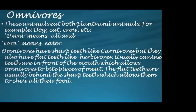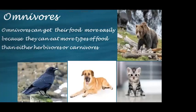Let's talk about omnivorous animals. These animals eat both plants and animals. For example, dog, cat, crow, and even human beings are all examples of omnivores. The word 'omni' means all and 'vore' means eater. Omnivores have sharp teeth like carnivores but also flat teeth like herbivores. The canine teeth in front allow omnivores to bite pieces of meat, while the flat teeth behind allow them to chew all their food. Omnivores can get their food more easily because they can eat more types of food than either herbivores or carnivores.